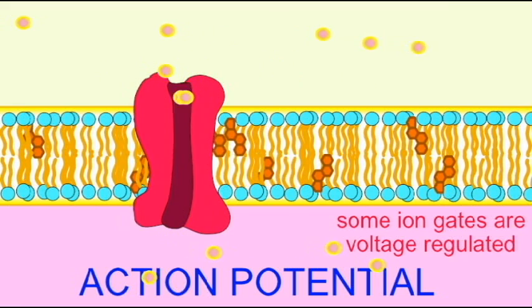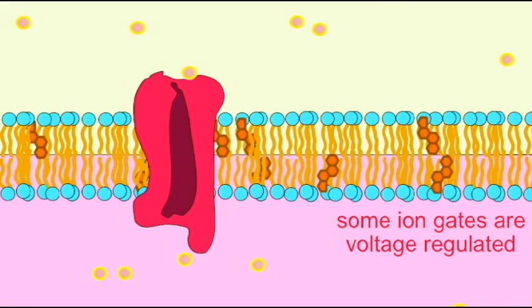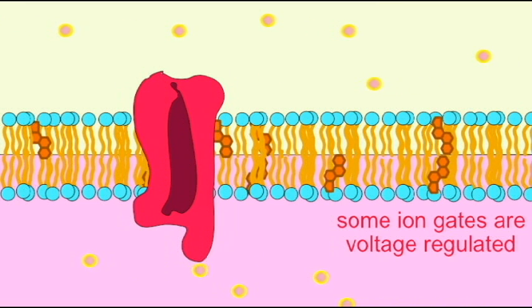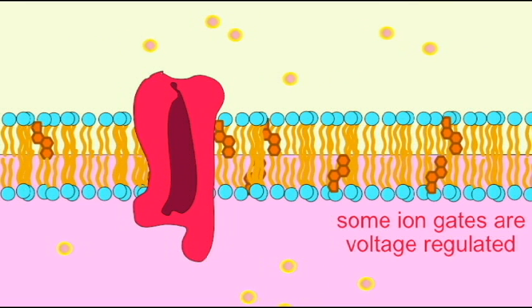But if this electric potential were to change, say during an action potential, then these gates would open and allow their ions to move from an area of high concentration to low.